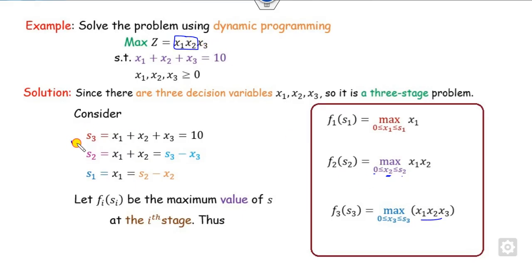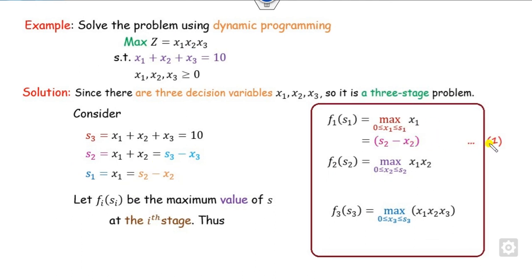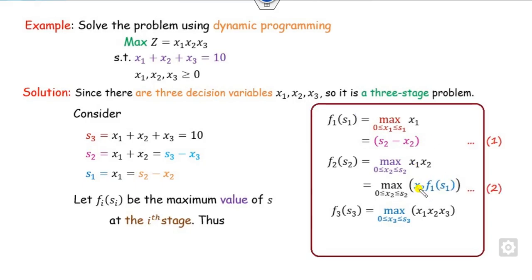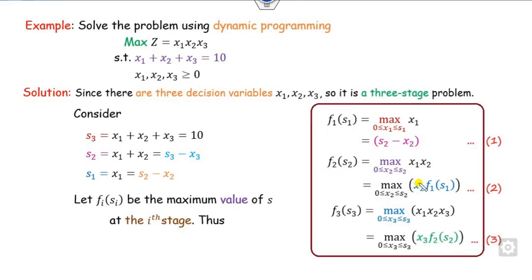We substitute the value of x1, which is s2 minus x2, defining this as equation number one. The value of x1 in terms of the function is f1(s1). We write x2 as such, and the value of x1 and x2 combined is represented as f2(s2). Now our task is to solve these three equations, starting with equation number one.